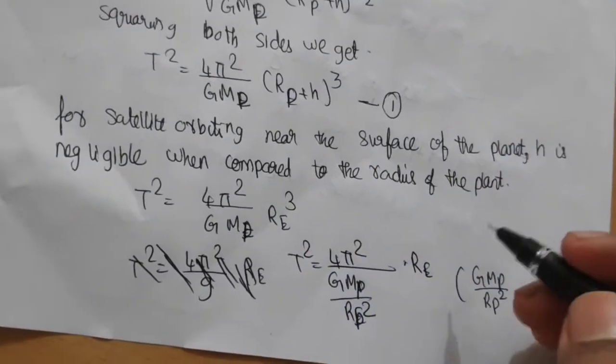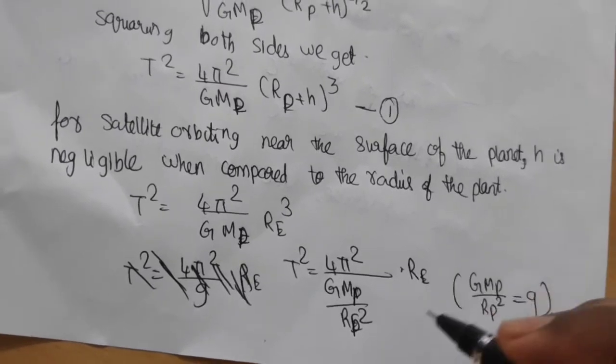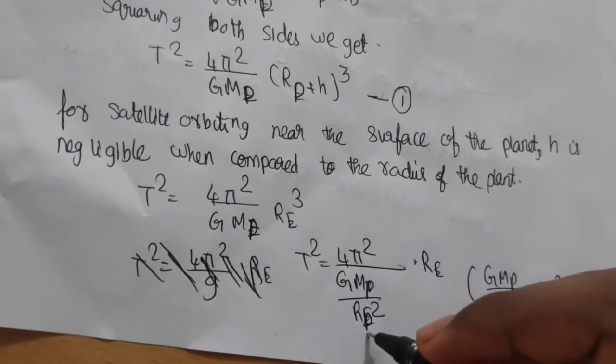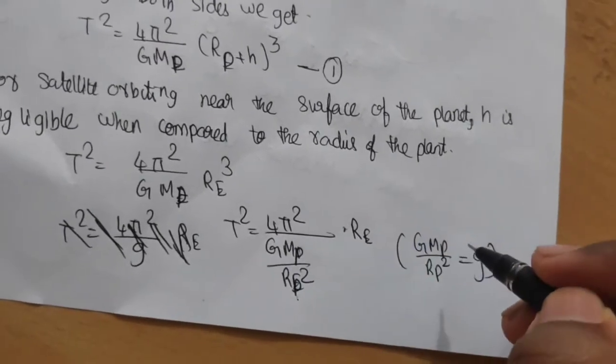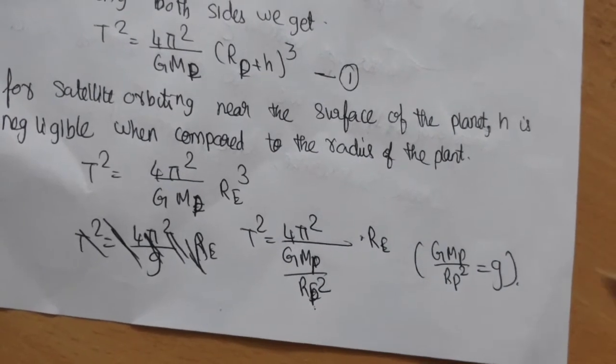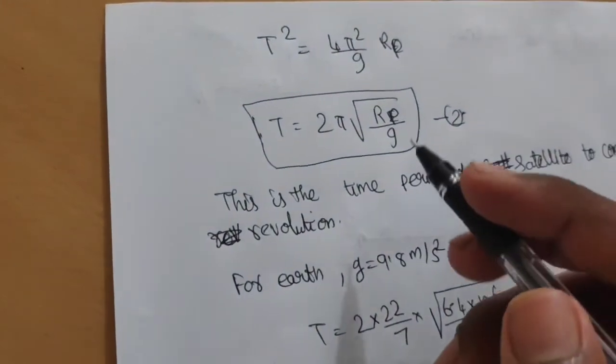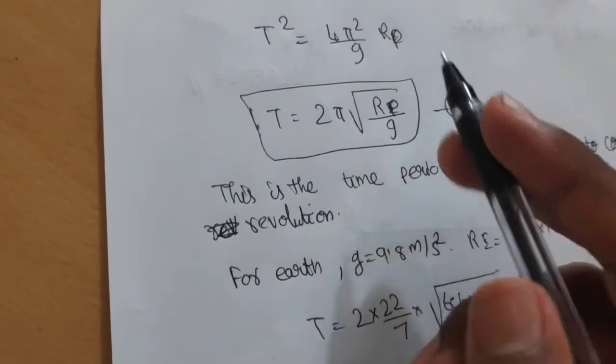Here Rp³ is split into Rp·Rp². We have GMp/Rp² = g, the acceleration due to gravity. So T² = (4π²/g)Rp.